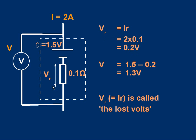How about the terminal PD — the voltage between the outside terminals of the cell? It's very simple. We take the EMF, which is 1.5, and we just subtract the voltage across the internal resistance. It's 1.5 minus 0.2, and the terminal PD is simply 1.3 volts — it's less than the EMF. The question is, why did I do that? Why did I take away 0.2 from 1.5?